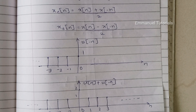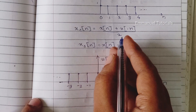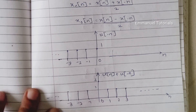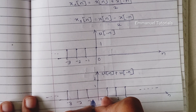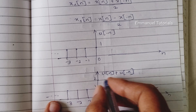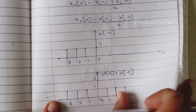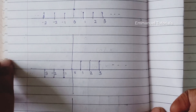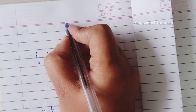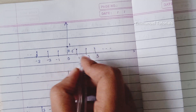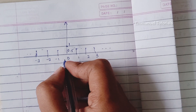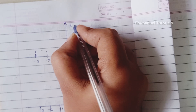This is our even part's numerator, which is u(n) plus u(-n). Now to get the exact even part, we divide by 2, so all amplitudes are divided by 2. From minus infinity to minus 1, the amplitude becomes 1/2 which is 0.5. Similarly, from 1 to infinity it is 0.5. At n equal to 0 it will be 2/2 which is 1. So at n equal to 0 the amplitude is 1, and at all other points it is 0.5. This is our even part of the signal.